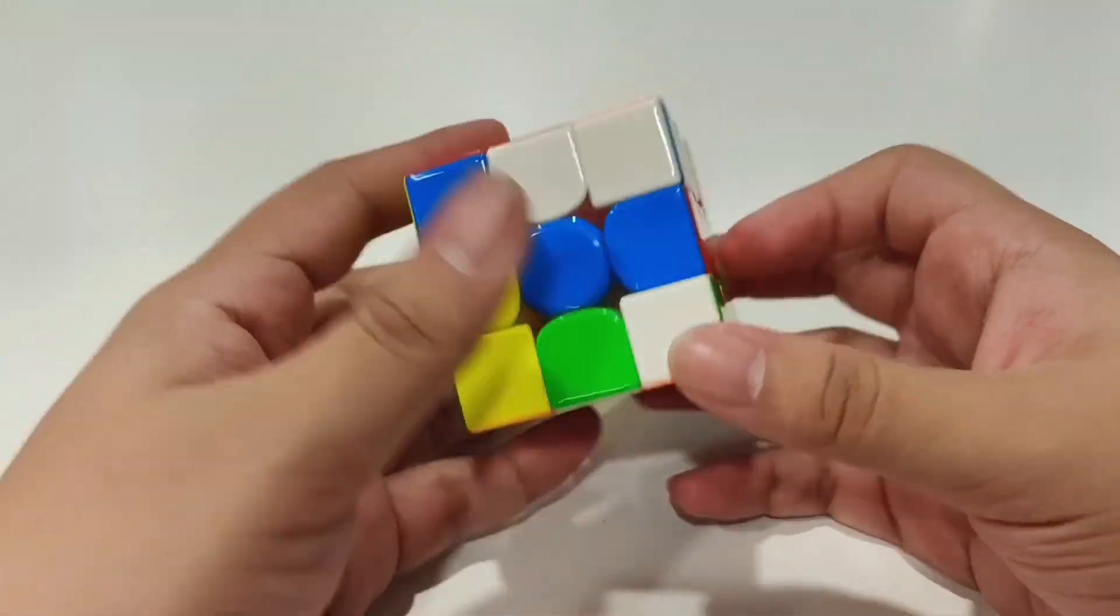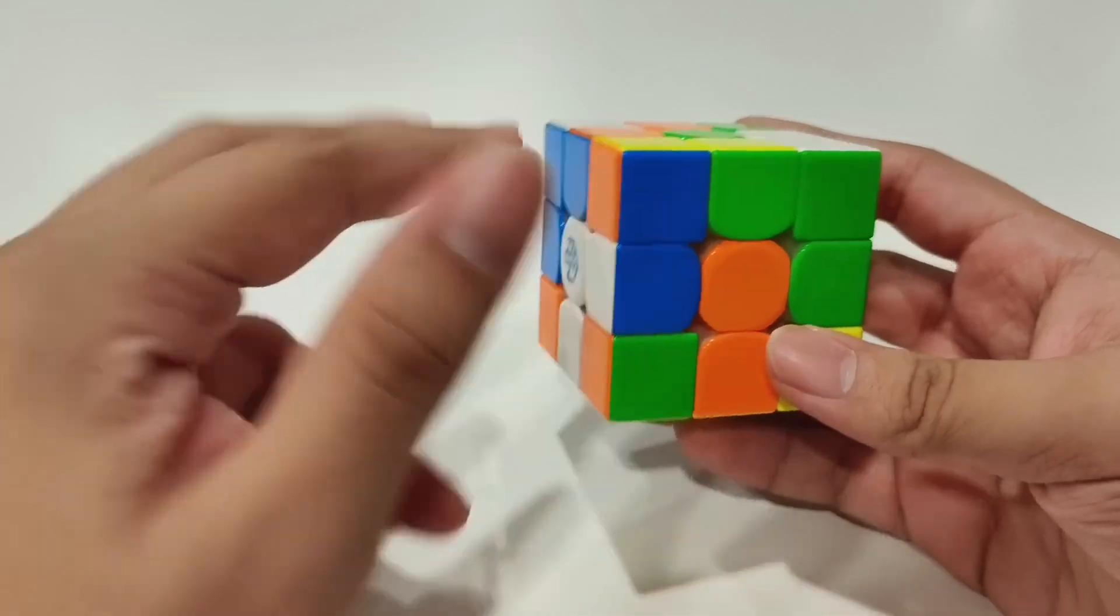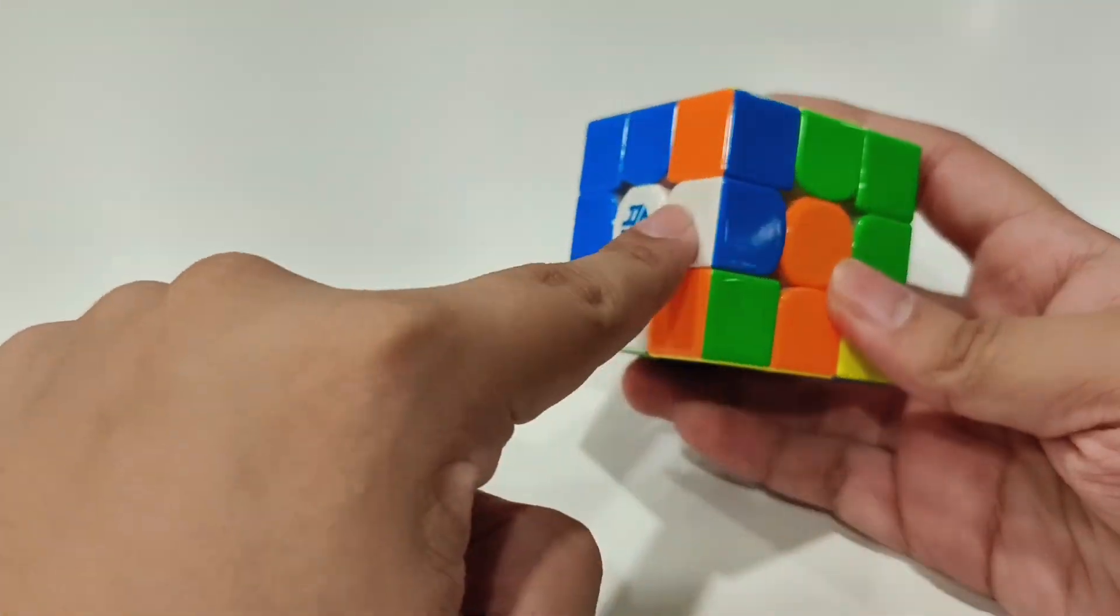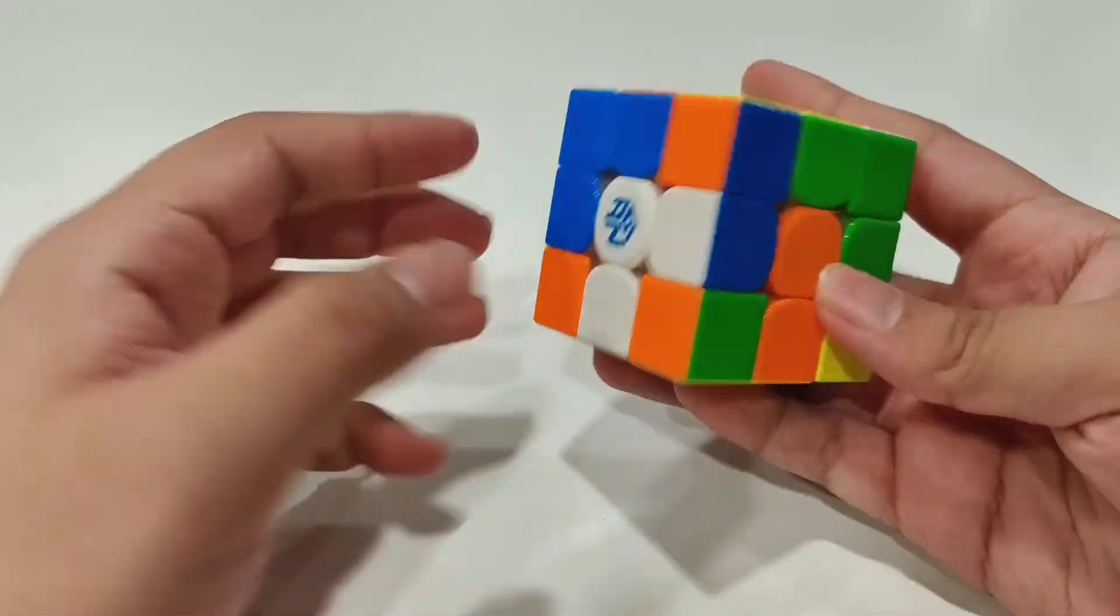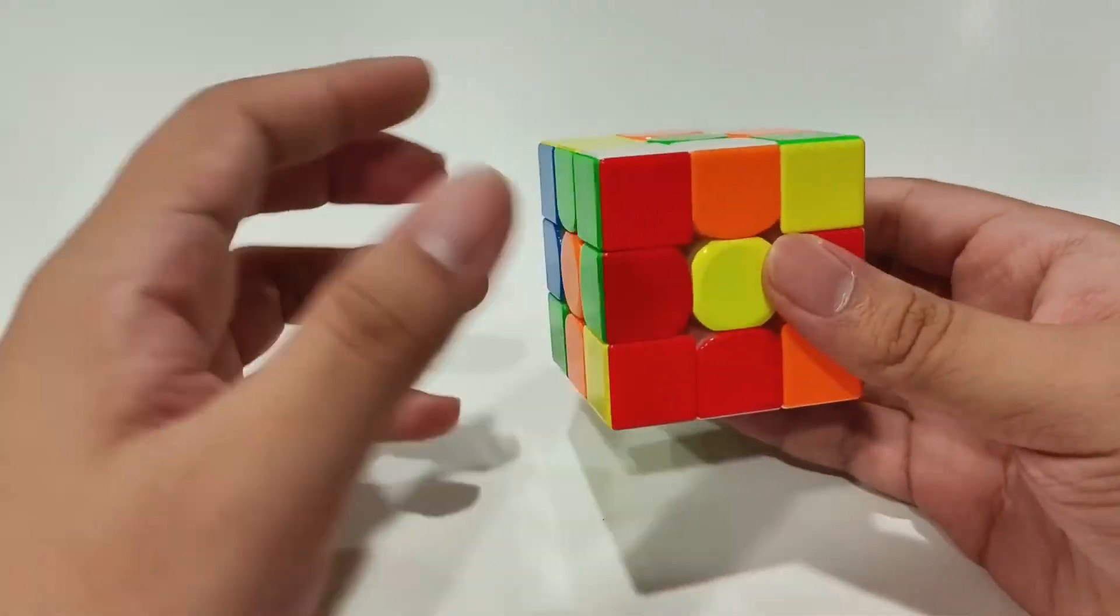Alright, so here's the scramble. At first I looked at blue because cross is pretty easy. As you can see, two moves to insert these two and then left with this one, but I always look for like one or two F2L pairs at first.